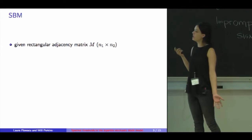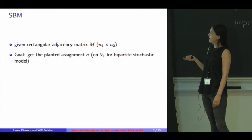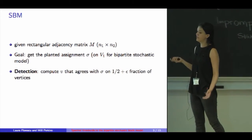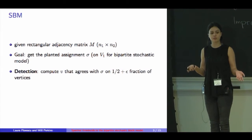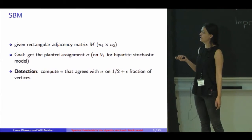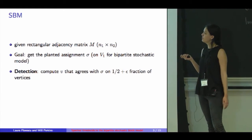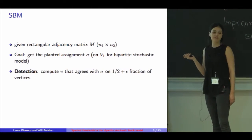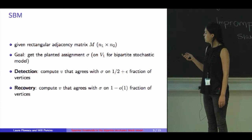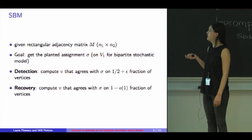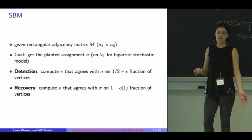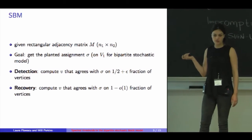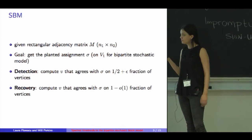In the stochastic block model, I'm only given the rectangular adjacency matrix, and the goal is to get the planted assignment on the left-hand side. I'm going to say that I detected the partition if I compute a vector that agrees with the actual labels on at least half the fraction of vertices, so better than random. And I recover the partition if I compute a vector that agrees with the planted assignment on 1 minus little o of 1 fraction of vertices. So recovery, in my definition, is stronger than detection.